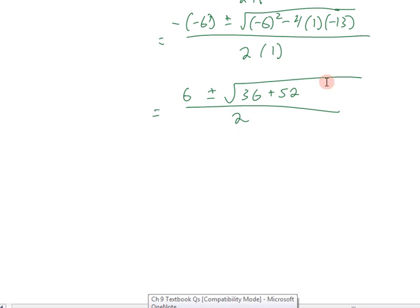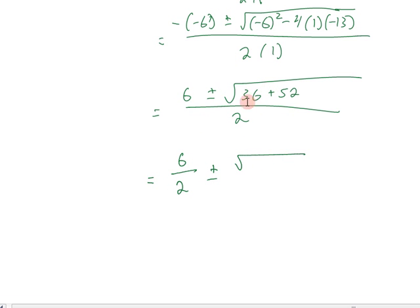Next up, we'll try and add those two together. And we'll distribute the division by 2 into each of the terms on top. So we'll get 6 over 2 plus or minus the square root of 36 plus 52 is 88 over 2, because we distributed the 2 into each term.